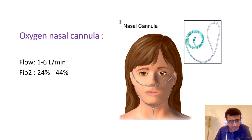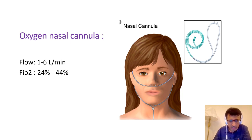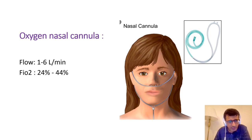Starting with low-flow devices: the most commonly used is the oxygen nasal cannula — simple tubing with nasal prongs, very cost-effective and comfortable. The patient can talk, eat, drink, and sit. The only limitation is the limited FiO2 it can provide — maximum 44% at maximum flow of 6 L/min, which can also cause dryness. This is a very beneficial device for treating mild hypoxemia.